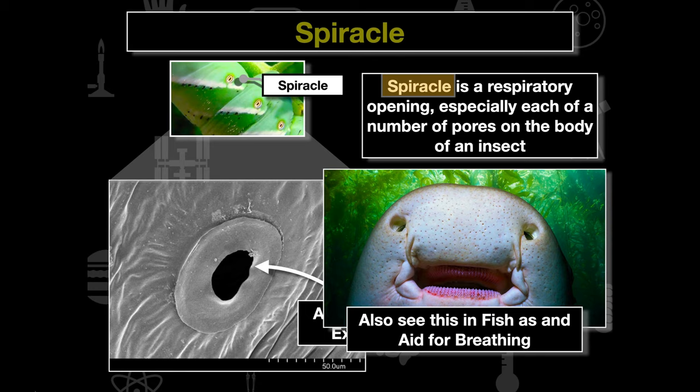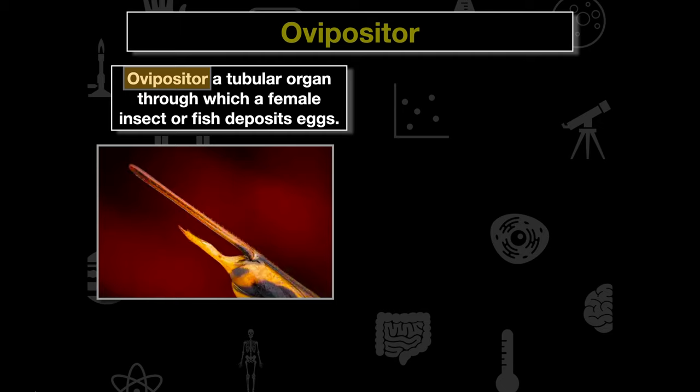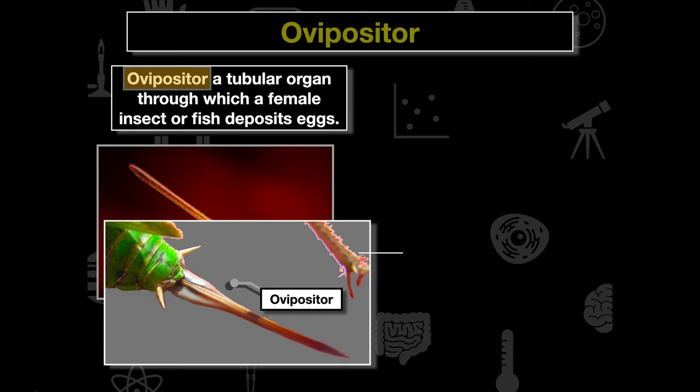The other important organ we'll see is the ovipositor. The same word is used for both fish and insects — it allows the deposit of eggs. In insects, it's usually a spear-like structure located on the organism.